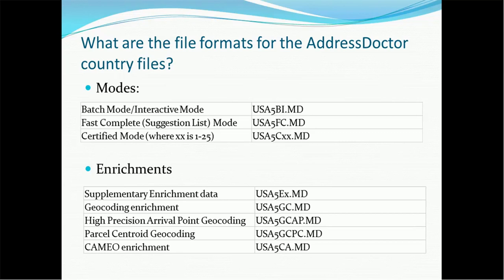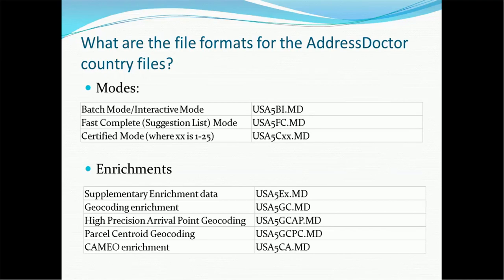For fast completion, the format is USAFI_FC.md. For certified mode it is USAFI_CXX.md. There are also enrichment files for advanced features: supplementary enrichment data uses USAFI_EX.md; geocoding enrichment uses USAFI_GC.md; high precision arrival point geocoding uses USAFI_GC_AP.md; partial centroid geocoding uses USAFI_GC_PC.md; and CAMEO enrichment uses USAFI_CA.md.